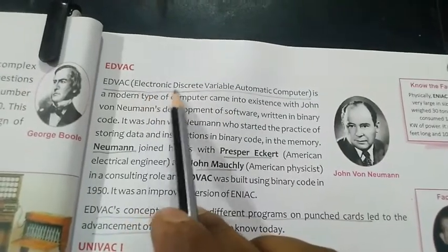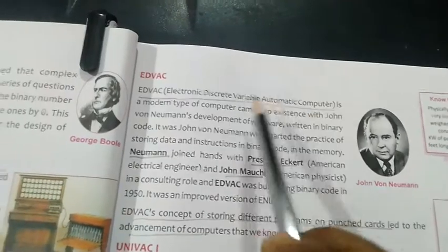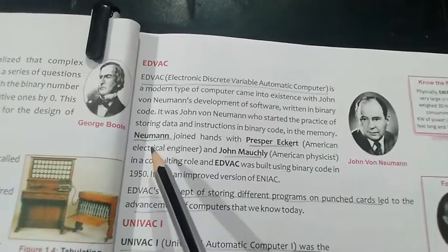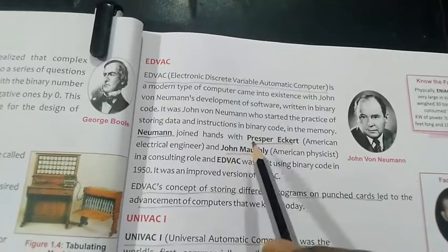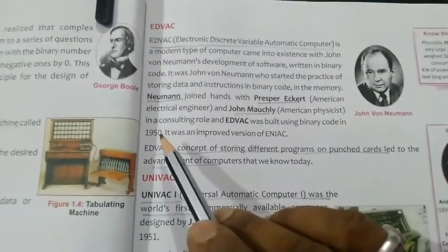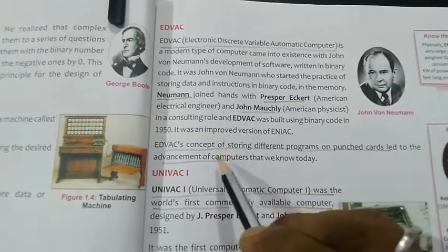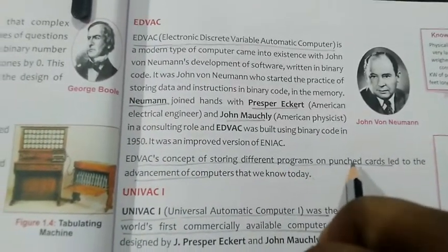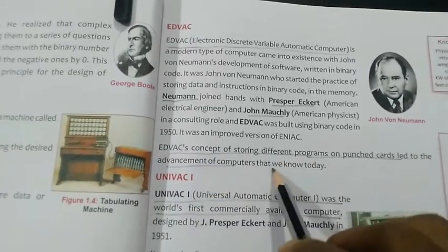The next machine is EDVAC — Electronic Discrete Variable Automatic Computer. This was developed jointly by John von Neumann, John Mauchly, and John Presper Eckert in the year 1950. The EDVAC concept of storing different programs on punch cards led to the development of the advanced computers that we know today.